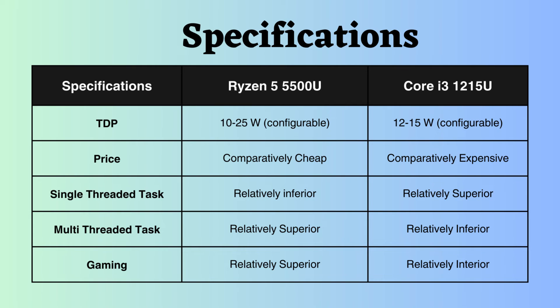In terms of price, the Ryzen 5500U is more affordable than the Intel i3-1215U. For single-threaded tasks, the Intel i3-1215U performs better, while in multi-threaded tasks, the Ryzen 5500U seems to have the edge. In gaming, the Ryzen 5500U also appears to outperform the Intel i3-1215U.